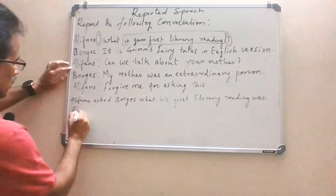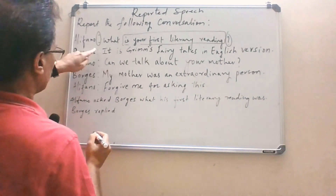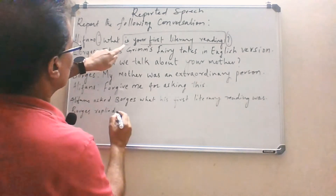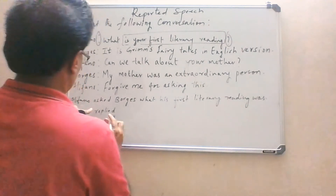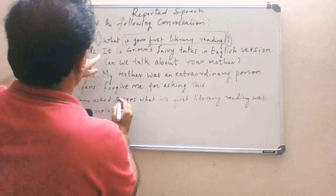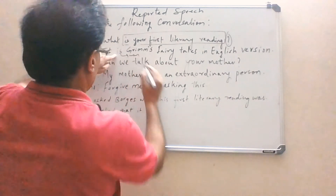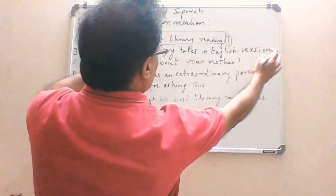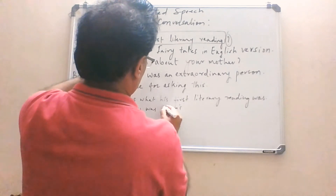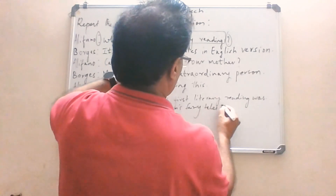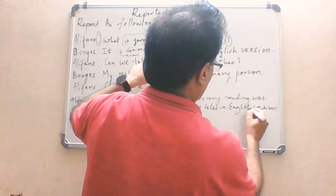Because Bogus replied — the reporting verb 'replied' is used because it is a statement which is a reply to a question. Bogus replied — to join both parts, the conjunction 'that' is used since it is a statement. 'Is' is changed to 'was'. The rest of the sentence does not undergo any change. So: Bogus replied that it was Grimm's Fairy Tales in English version.